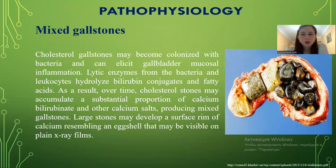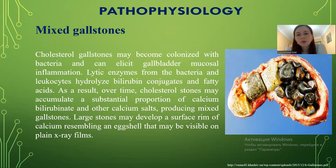In mixed gallstones, cholesterol gallstones may become colonized with bacteria and elicit gallbladder mucosal inflammation. Enzymes from the bacteria and leukocytes hydrolyze bilirubin conjugates and fatty acids. As a result, over time, cholesterol stones may accumulate a substantial portion of calcium bilirubinate and other calcium salts, producing mixed gallstones. Large stones may develop a surface rim of calcium resembling an egg shell that may be visible on plain X-ray films.